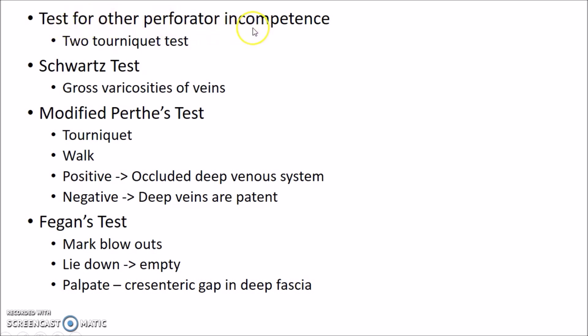To test for other perforator incompetence, you need to know the perforators present in the lower limb. Dodd's perforator is present above the knee in the inferior one-third of the thigh; Boyd's perforator is present just below the knee; Cockett's or medial ankle perforators are three in number, present 5 cm, 10 cm, and 15 cm above the medial malleolus. Each perforator is tested individually using the two-tourniquet test: the patient lies down, veins are emptied, one tourniquet is tied above and one below the perforator, then the patient stands — if varicosity appears between the two tourniquets, the perforator is incompetent.